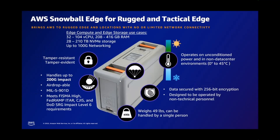We bring in the Snowball Edge for that ruggedized computing capability in the field. This device operates in more austere environments, handles more shock in a compact format, weighing just under 49 pounds — our Snowball clocks in at 41 pounds. We chose the higher end of the vCPU we could, going with 104, so we could max out some of our partners' capabilities with that computing power. It is a pretty neat and very portable device.